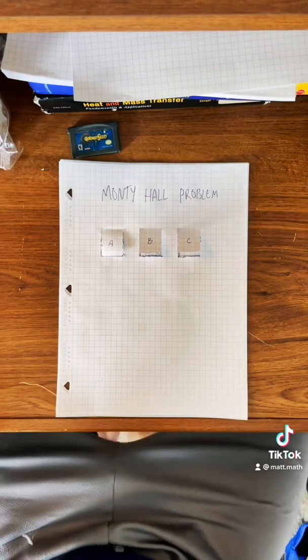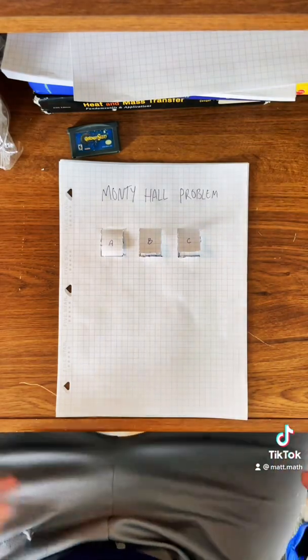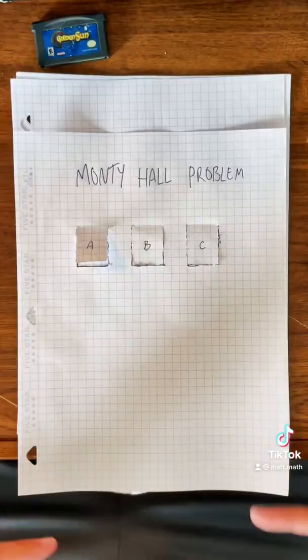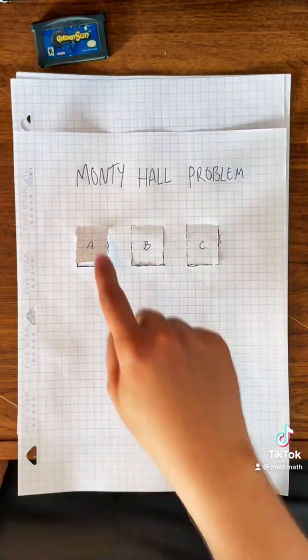So if you pick the door with the car, you get the car. That's awesome. The other two though have nothing. We're going to play our little game, and we're going to say I want door A.